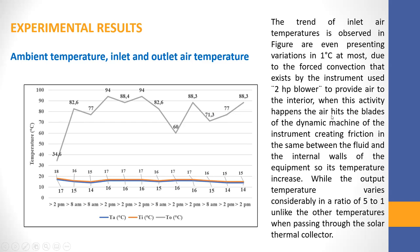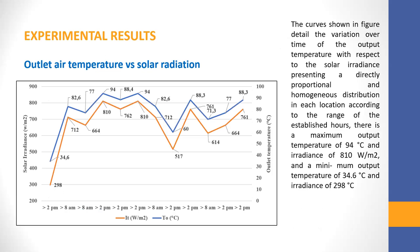While the output temperature varies considerably in a ratio of 5 to 1, unlike the other temperatures when passing through the solar thermal collector.